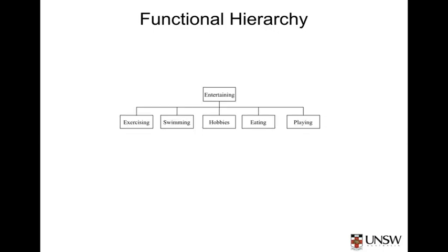Here's another way we might group the functions. In the previous example, entertaining was considered one of the subordinate functions of the sheltering function. In this hierarchy, entertaining is considered the primary function of the dwelling, and therefore, since it's not subordinate to sheltering, it considers both indoor and outdoor entertaining. Also note that eating in the previous example was a function of sheltering, but now it's a sub-function of entertaining.